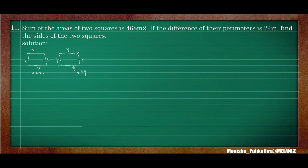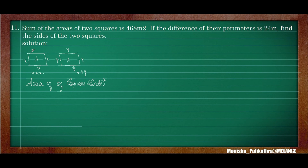Moving on to the last question. The sum of the areas of two squares is 468. Area of a square equals side squared. Let the side of square one be x, area is x squared. Let the side of square two be y, area is y squared. So x squared plus y squared equals 468 — equation 1.